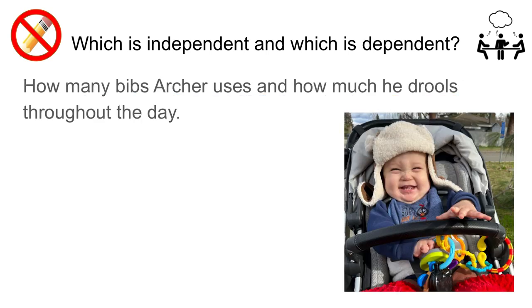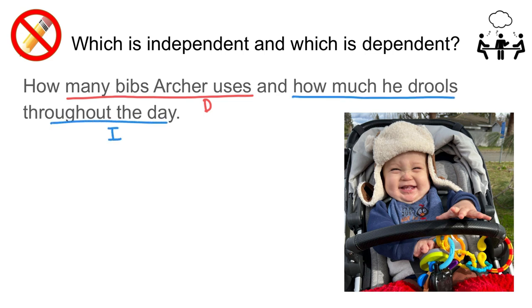How many bibs Archer uses and how much he drools throughout the day. We ask: does the amount of bibs Archer uses depend on how much he drools, or does how much he drools depend on how many bibs he uses? The first makes more sense — the amount of bibs he uses will depend on how much he drools. So how many bibs Archer uses is the dependent quantity, and how much he drools is the independent quantity. The dependent quantity changes depending on how the independent quantity changes — if he drools more, he'll use more bibs.